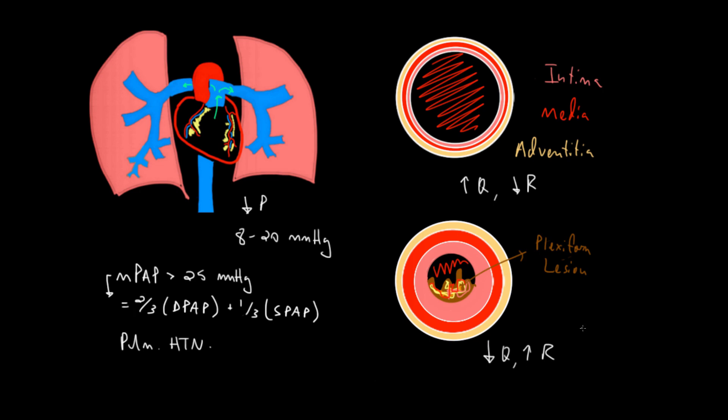This state of low flow and high resistance leads to higher pressures in the pulmonary system. We can represent this in the lungs where we go from a normal vessel caliber in blue to the caliber of a vessel we might expect in pulmonary hypertension in orange. You can see there's a serious reduction in the diameter of these pulmonary arteries.